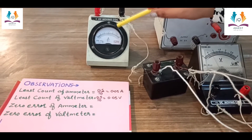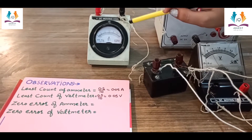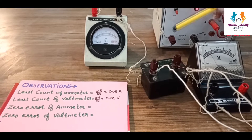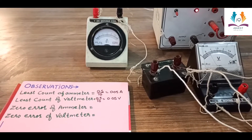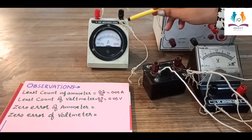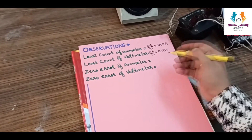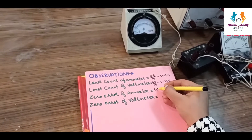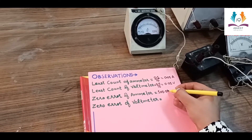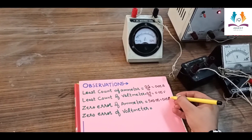To calculate the zero error in the ammeter: the ammeter shows 5 divisions. The reading is 5 multiplied by the least count 0.05, which equals 0.25 ampere. So the zero error in our ammeter is 0.25 ampere.